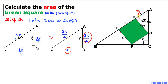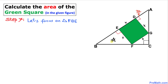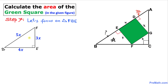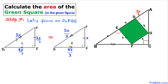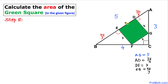Now focusing on triangle FBE: again the sides are in ratio 3:4:5. The side corresponding to 3x is X units. Dividing by 3 across the board, this side turns out to be 4x/3. So side FB is 4x/3.